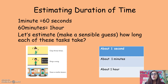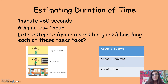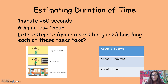When thinking about duration of time, we can measure a second by blinking our eyes or clapping our hands. One minute equals 60 seconds, and 60 minutes equals one hour. Can you make a sensible guess about how long each of these might take: clapping your hands three times, singing a song, or having our maths lesson?